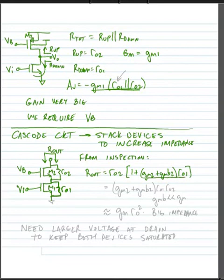This R01 term is much larger than 1. And so we can simplify this and approximate it as being equal to gm2 plus gmb2 times R01 times R02. Now further, we know that gmb is usually much, much less than gm.